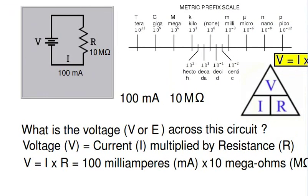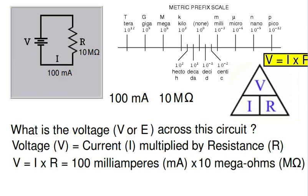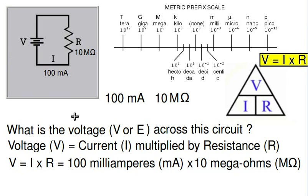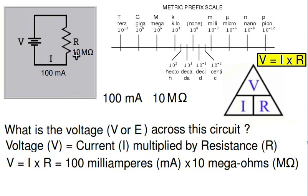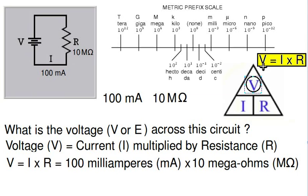Let's look at one more example. Again the same circuit, but this time we have a known current of 100 milliamperes and a known resistance of 10 mega ohms, and we want to find the voltage V across the circuit. Note that V and E represent the same quantity. Using Ohm's law, covering up V gives us IR, so voltage equals current multiplied by resistance.